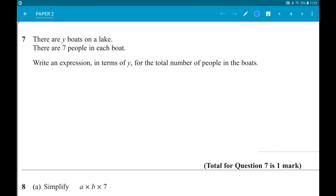Number 7: There are Y boats on a lake. There are 7 people in each boat. Write an expression in terms of Y for the total number of people in the boats. If there were 5 boats, we would do 7 times 5. There are Y boats, so it's 7 times Y, which is just 7Y.